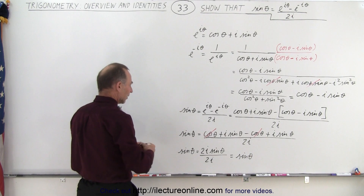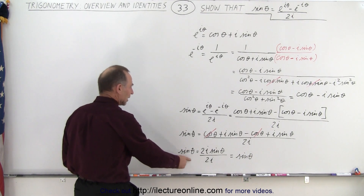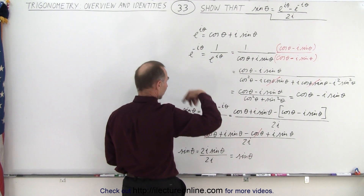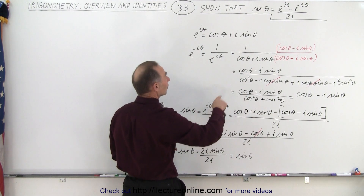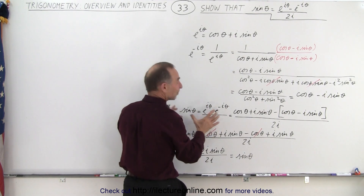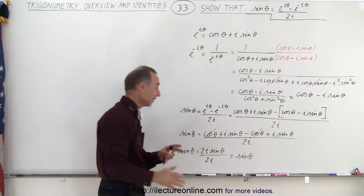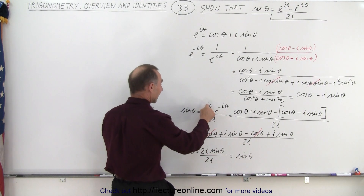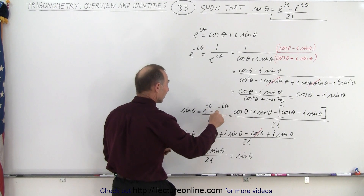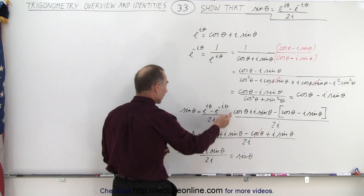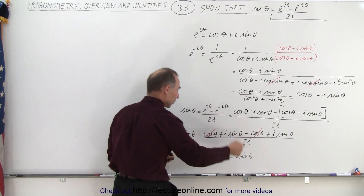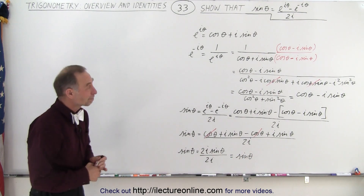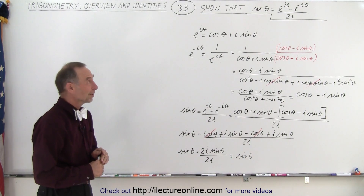So you can see that sine of theta equals sine of theta. This confirms that sine of theta is equal to e to the i theta minus e to the minus i theta divided by 2i, since that expression simplifies to the sine of theta. And that is how it's done.